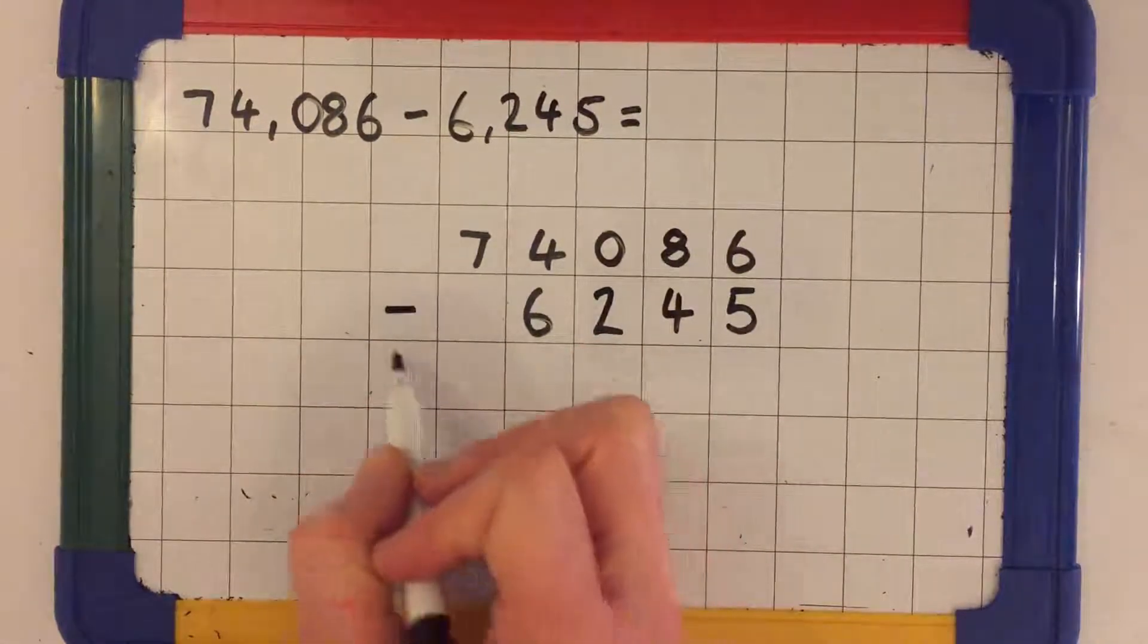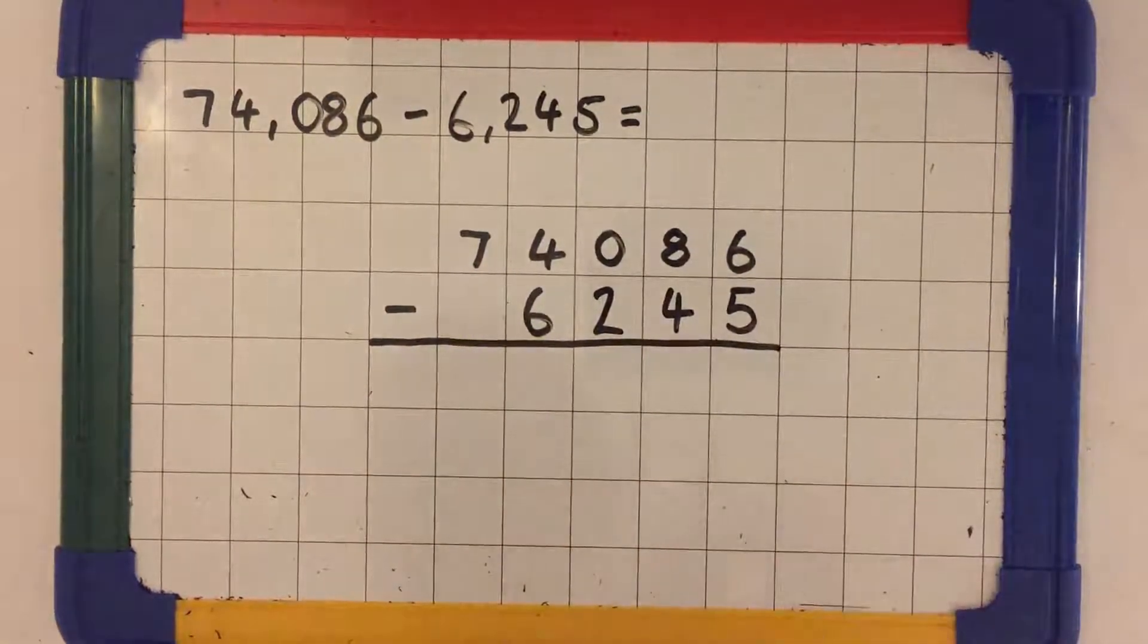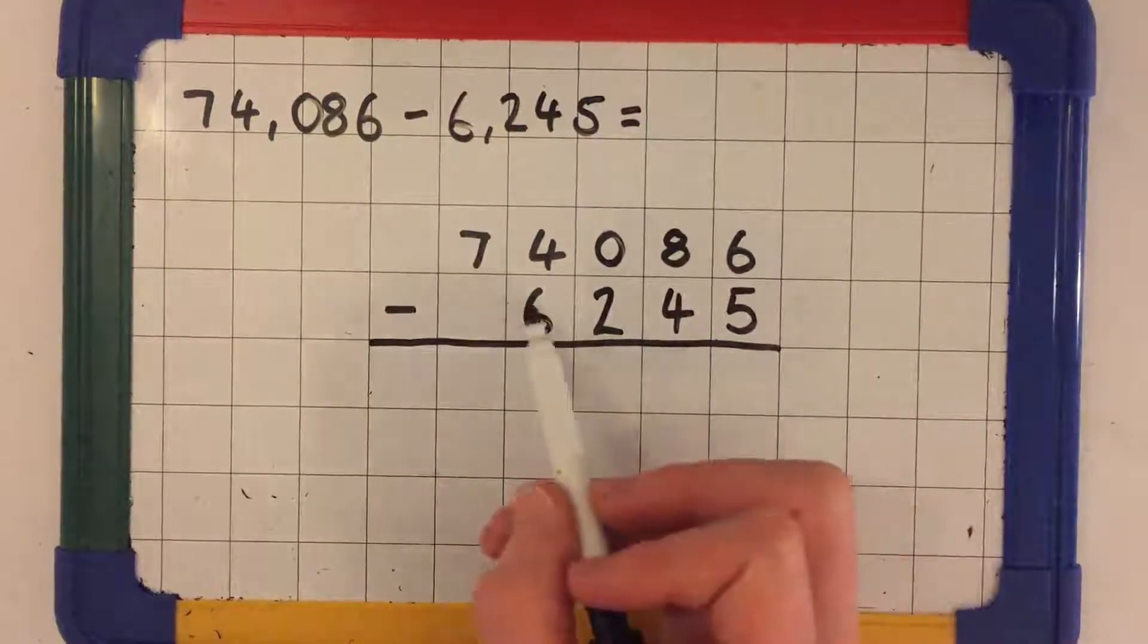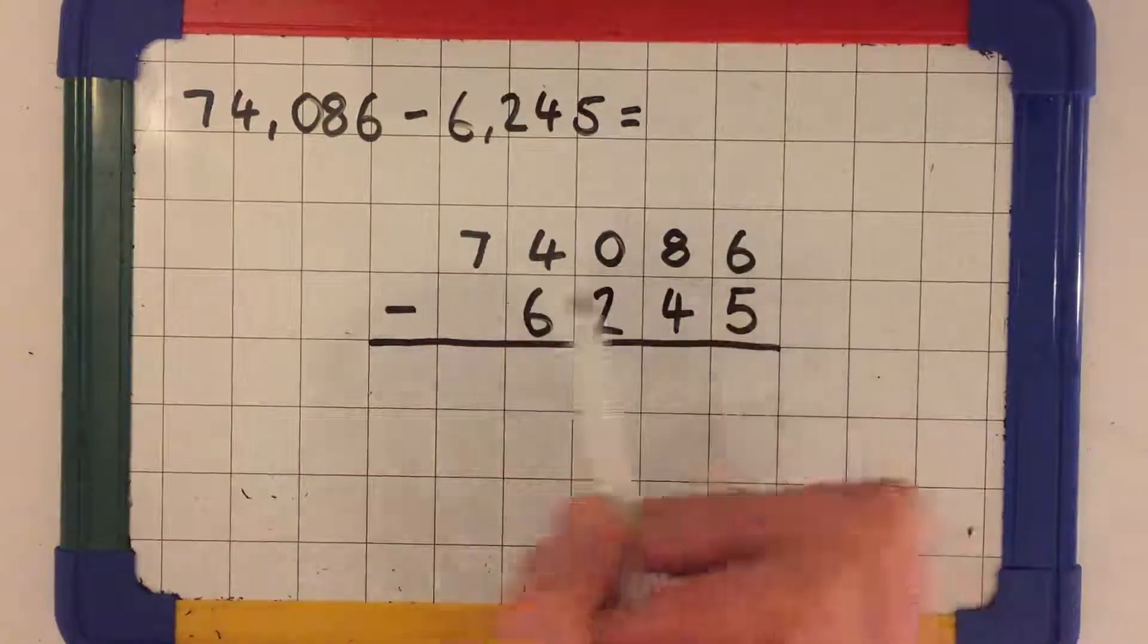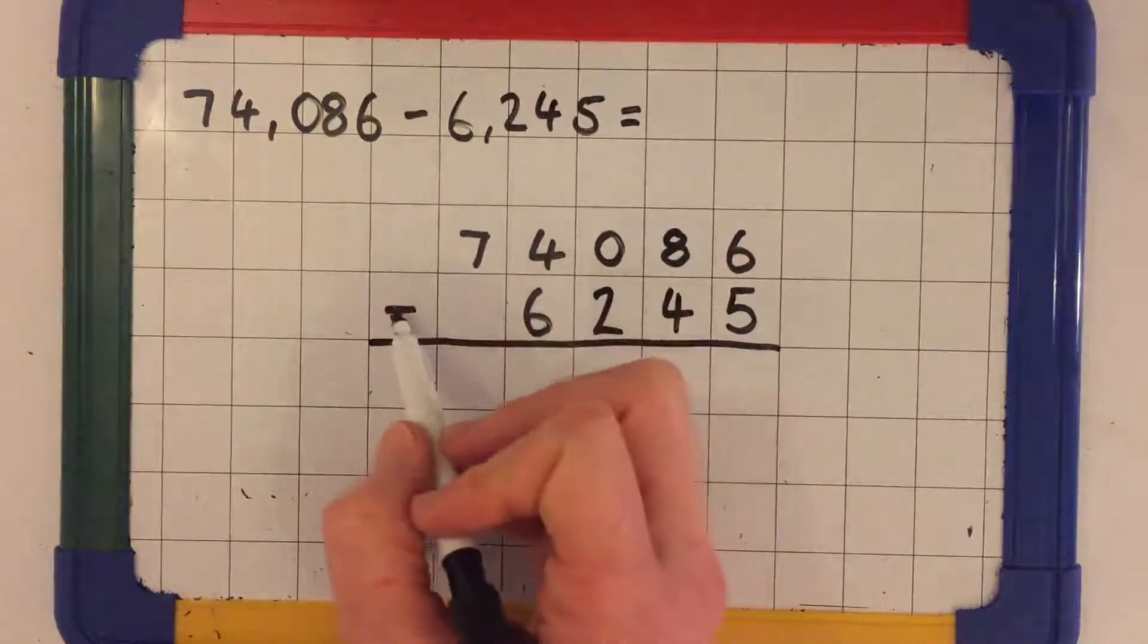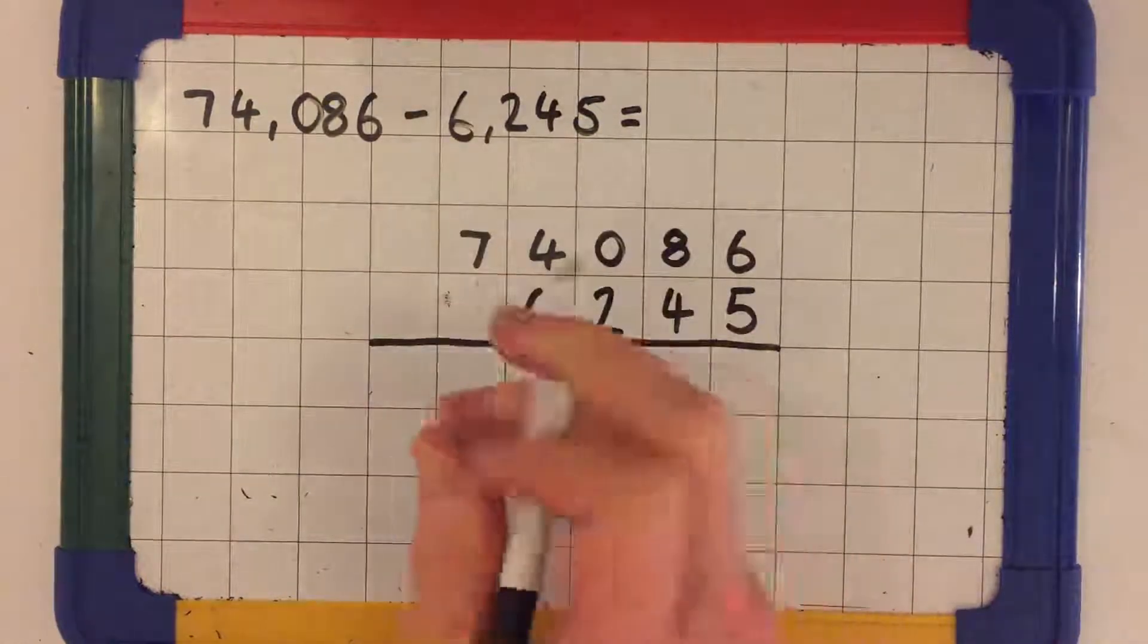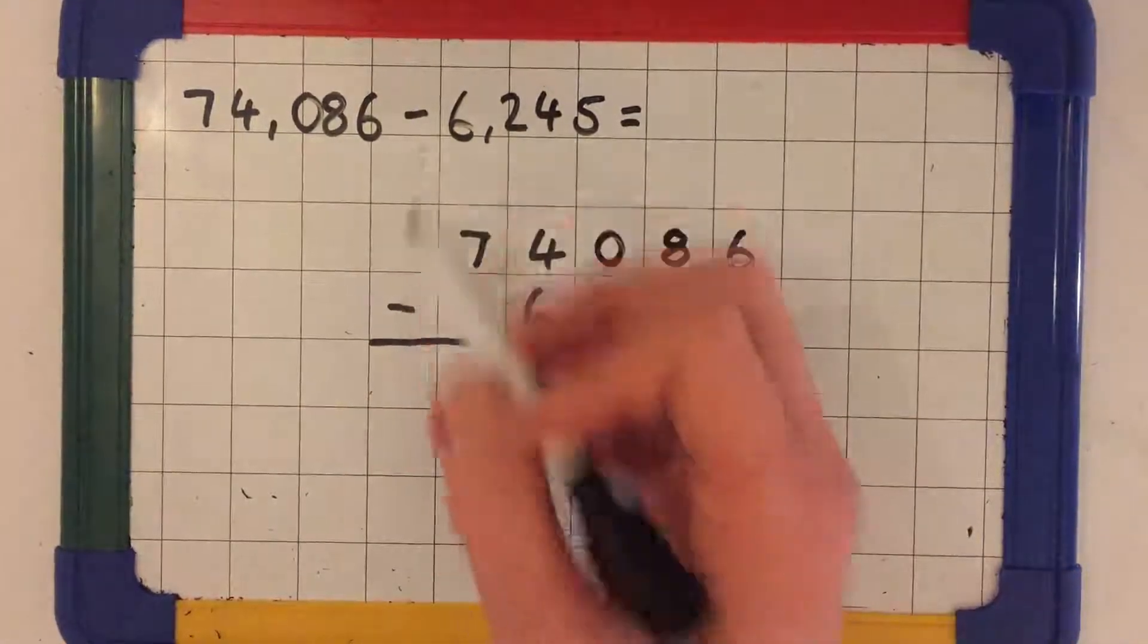You then write the subtraction sign and draw a line under your two numbers. Before you start solving, it's important that you check the two numbers that you've written down and check they're the same as in the question. Here, 6,245 I'm happy, 74,086 I'm happy. I'm also subtracting. This is a common error where children will add here instead of subtracting, or if it was an addition in the question, they may subtract. I'm happy we're subtracting.